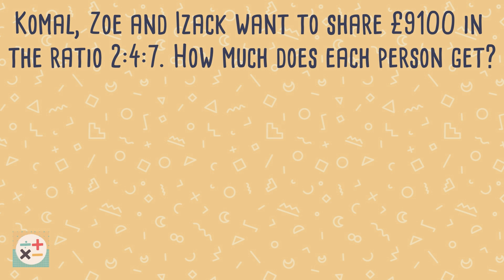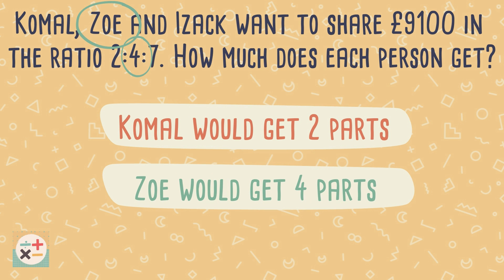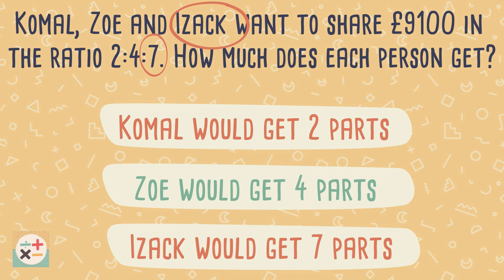Consider this question. Firstly, we need to understand how many parts each person will get. The subjects in the ratio question are always written in the same order as the ratio itself. In order to share out the money according to the ratio, we first need to find out how many parts there are in total. We do this by adding up all the numbers in the ratio.